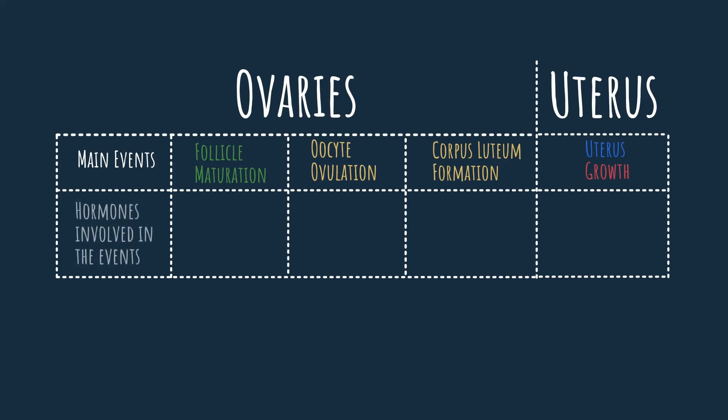The first hormone you need to know is the follicle stimulating hormone, or FSH — and you can probably guess its role by its name. What it does is stimulate the follicles to mature. The second hormone is called the luteinizing hormone, or LH, and this hormone plays two main roles: it triggers the ovulation of the oocyte, and it forms and maintains the corpus luteum.